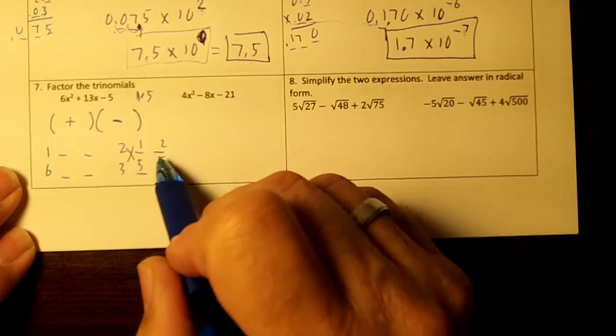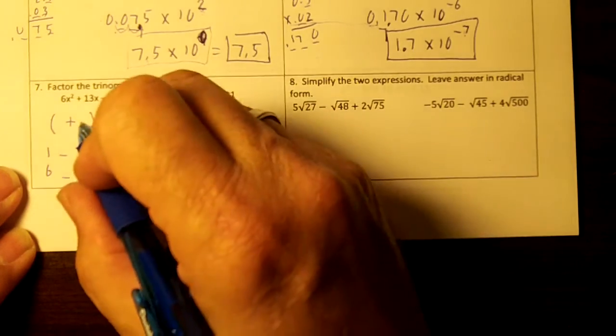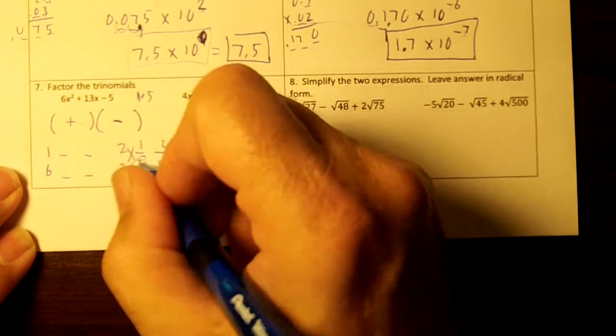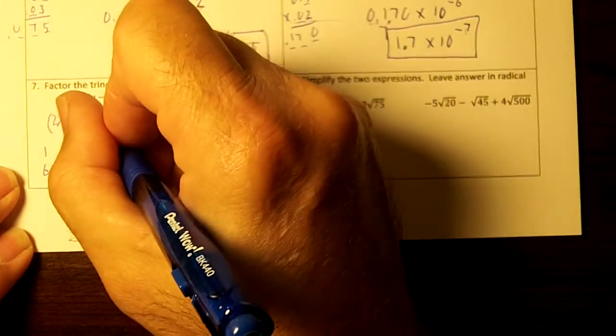Okay, 15 minus 2 is our 13. 15 is bigger. Circle this. This number goes right here, doesn't it? And it matches up with the 2. So I have 2x plus 5. And over here I have 3x minus 1.